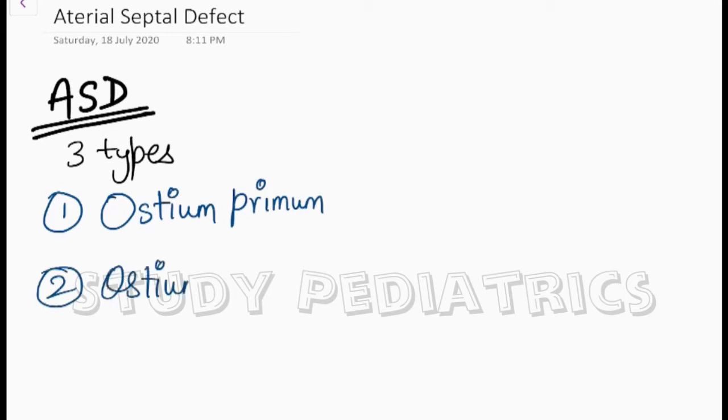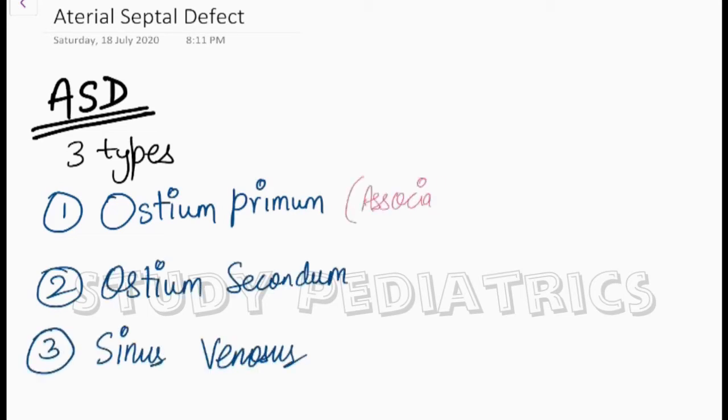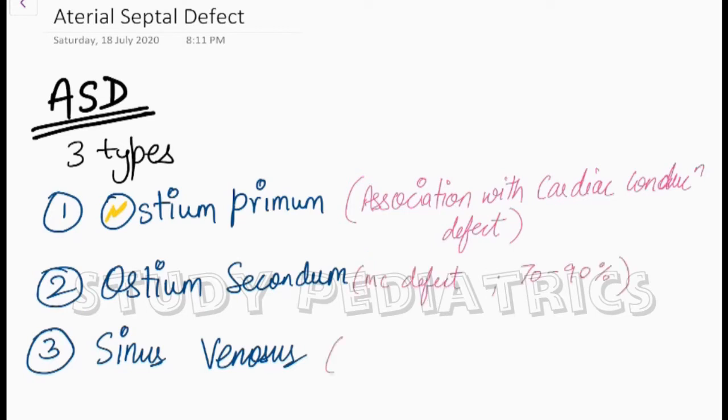Atrial septal defect ASD. ASDs are of three types: Osteum primum, Osteum secundum, and sinus venosus. Osteum primum has association with cardiac conduction defect. Osteum secundum is the most common defect present in 70-90% of patients, and sinus venosus is a rare condition.